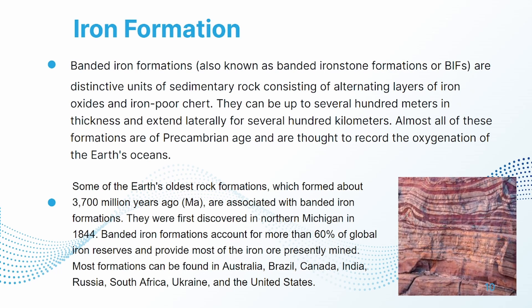They were first discovered in northern Michigan. Banded iron formations account for more than 60% of global iron reserves and provide most of the iron ore presently mined. Most formations can be found in Australia, Brazil, Canada, India, Russia, South Africa, Ukraine, and the United States.